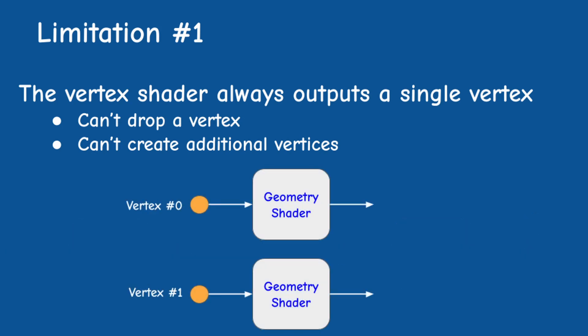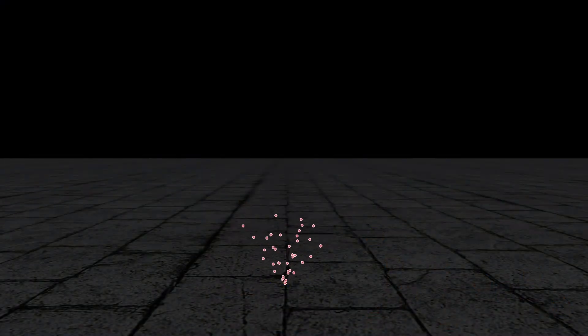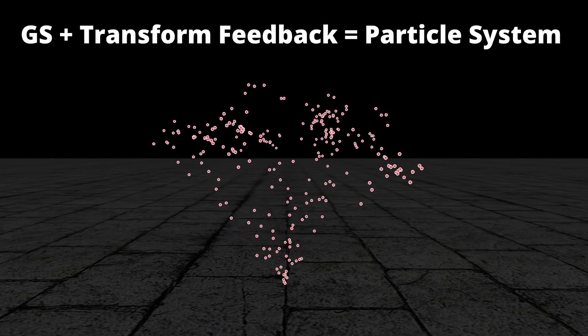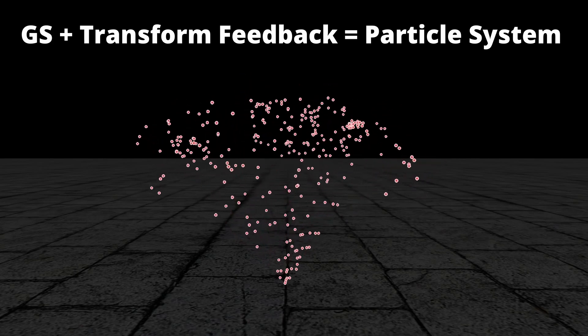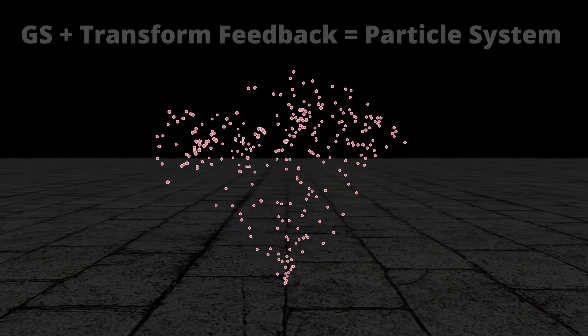The number of output primitives is dynamic, so you can output a single triangle on one vertex and three triangles on another. Combining this with another feature of OpenGL called transform feedback makes the GS very useful for particle systems, which we will see in the future.